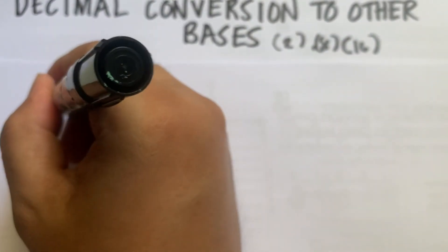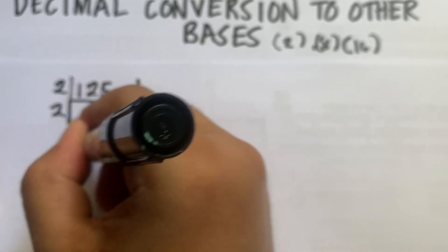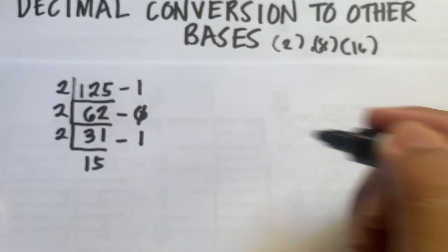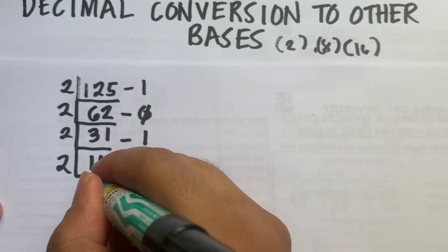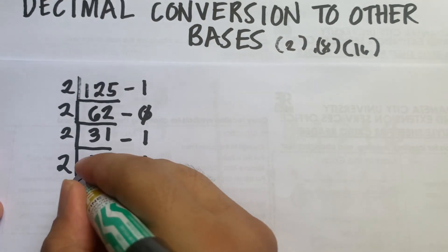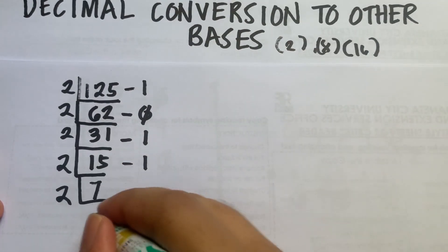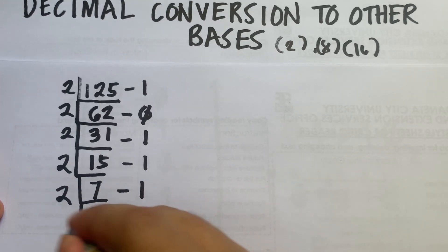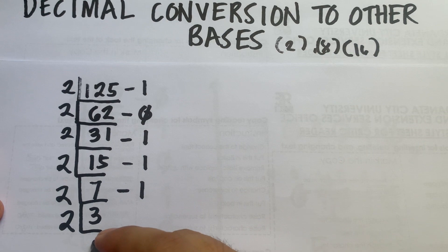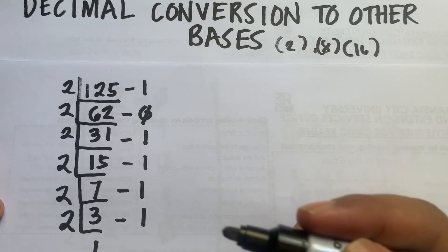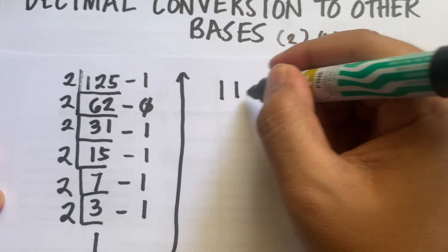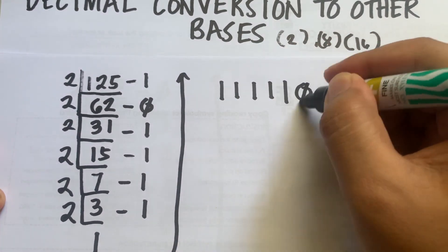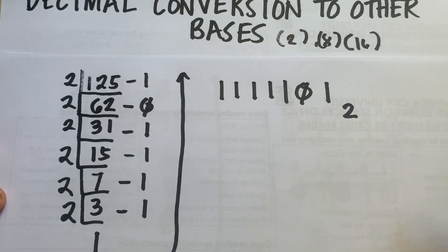Continuing the division: 62 divided by 2 is 31, remainder 0. Then 31 divided by 2 is 15, remainder 1. Then 15 divided by 2 is 7, remainder 1. Then 7 divided by 2 is 3, remainder 1. Then 3 divided by 2 is 1, remainder 1. Writing the remainders upward, we get 1, 1, 1, 1, 1, 0, 1. This is the binary equivalent of 125.